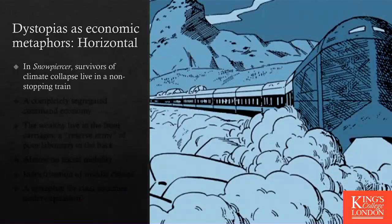Dystopias are organizations of scarcity. One organization is horizontal — that's Snowpiercer. If you're familiar with it: it's a non-stopping train where all the survivors from climate collapse have been placed. It's a command economy with no markets, no prices, and the class is completely segregated.